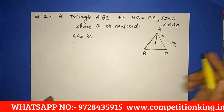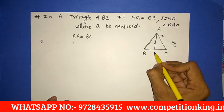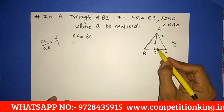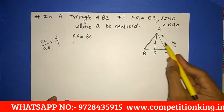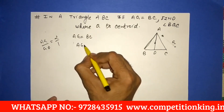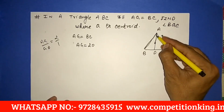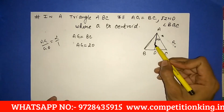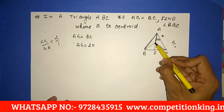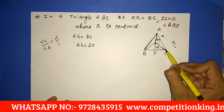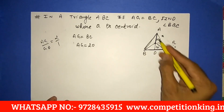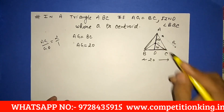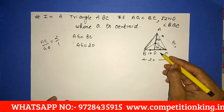We know about the centroid: it divides the median in the ratio 2:1, with the upper part being 2 and the lower part 1. So let's assume AG is 20. If AG is 20, then GD will become 10, because the ratio is 2 to 1. We have to find angle BGC. Since AG equals BC, if AG is 20 then BC is also 20. The median divides the opposite side into equal parts, so BD is 10 and DC is 10.